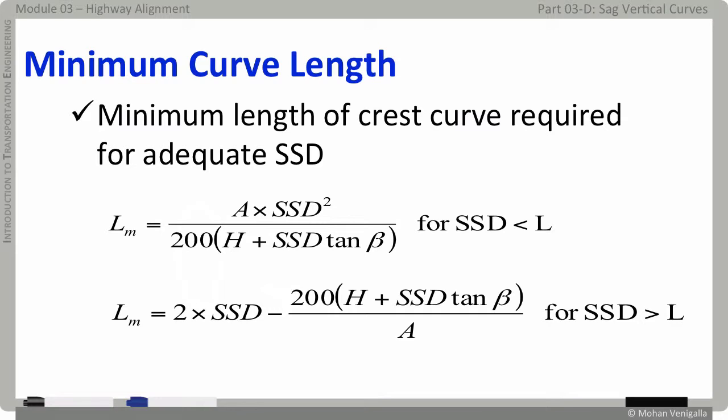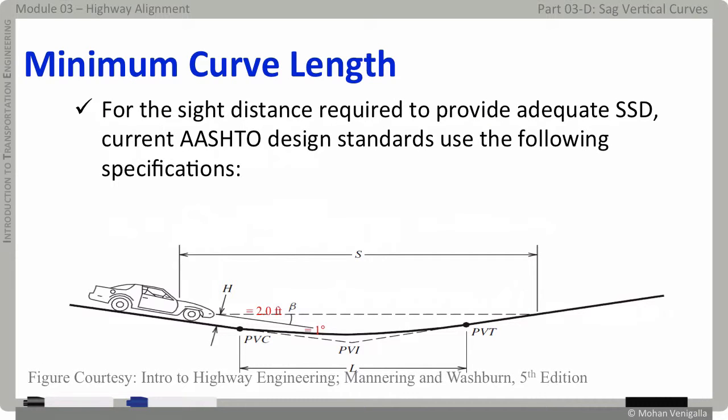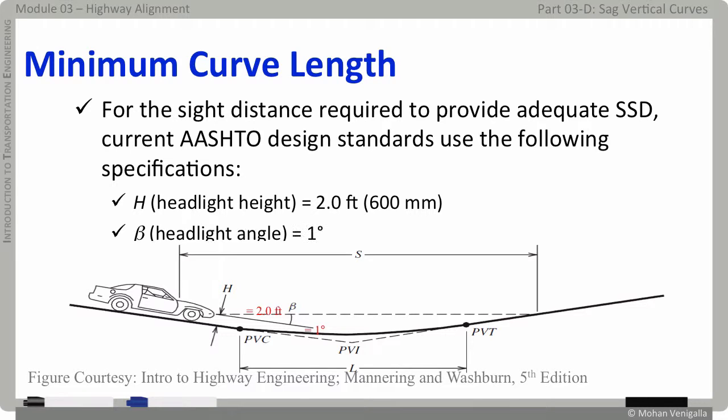These two equations: the first one is for the minimum length of the curve required when SSD is less than L, and the second equation is the minimum length of the curve required when SSD is greater than L. AASHTO specs call for a typical headlight of a passenger car at two feet high above the pavement level — that is, h equals two feet — and the angle beta is about one degree.